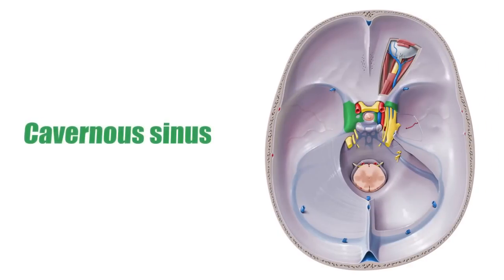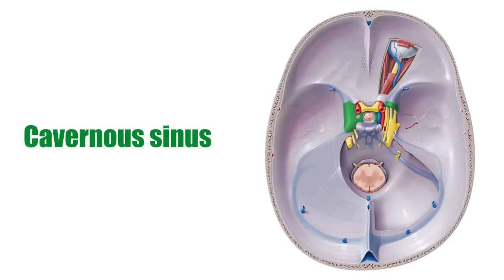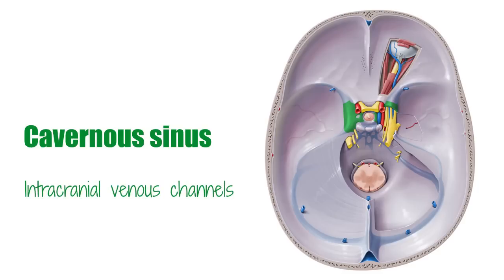The cavernous sinus is one of the dural venous sinuses responsible for venous drainage in the brain. Dural venous sinuses are intracranial venous channels found between the endosteal and meningeal layers of the dura mater. These incompressible venous channels are responsible for the drainage of venous blood from the brain and the meninges to the internal jugular vein. The dural venous sinuses are valveless, which allows for the bidirectional flow of blood.